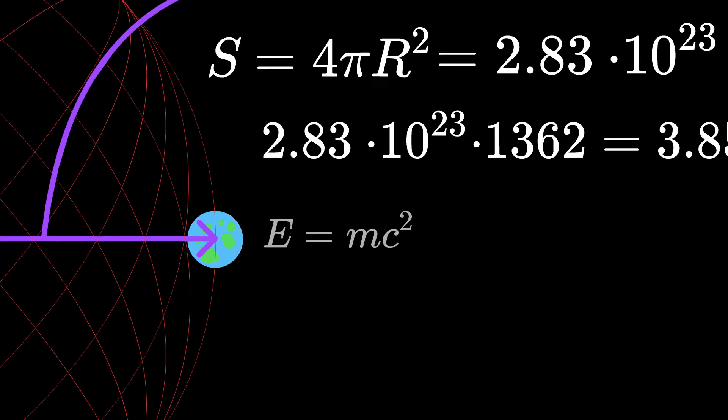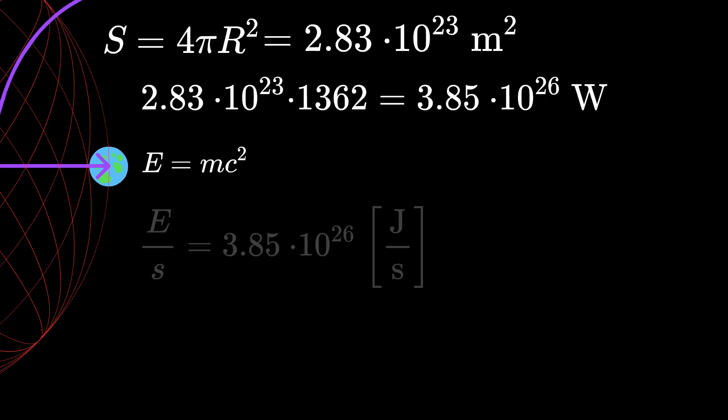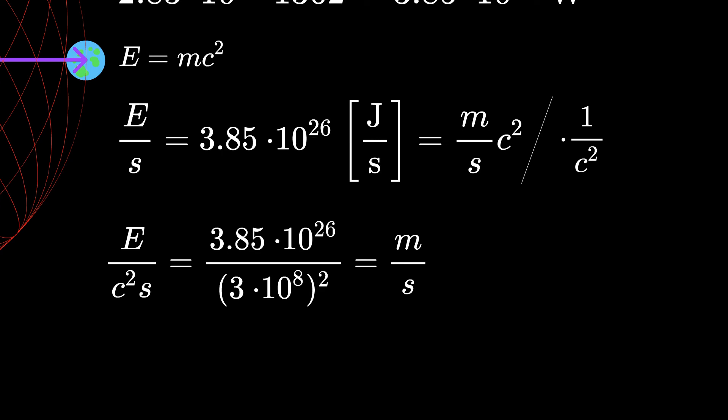Now it's time to use the famous Einstein's mass energy formula, which says that the energy is equal to mass times the speed of light squared. Since our Sun is producing 3.85 times 10 to the 26 joules every second, we can just divide it by the speed of light squared and we get the amount of mass our Sun is expelling into space every second in a form of light.